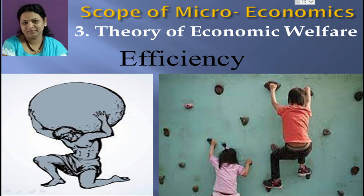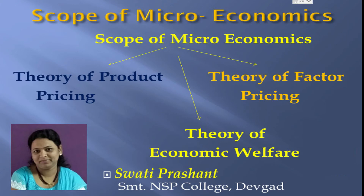Efficiency in production means production of maximum possible goods and services from given resources. It means all available resources are used to produce maximum output, and microeconomics helps to utilize these available resources. Efficiency in consumption is related to the distribution of finished goods to consumers — it looks toward maximum distribution of produced goods and services among consumers for maximum satisfaction.